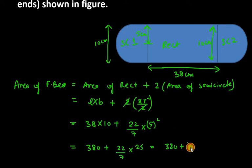this is coming out to be 78.57. Now you have to add 78.57 to 380, so your final answer will be 458.57 centimeter squared. So this is the area of flower bed which represents this whole figure which has a rectangle in